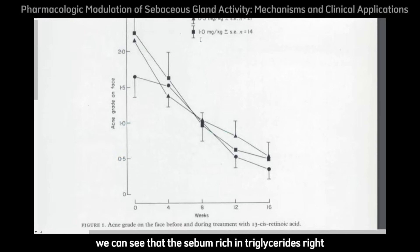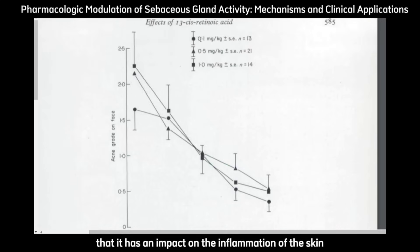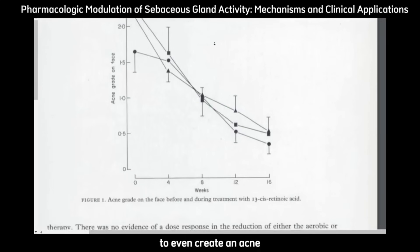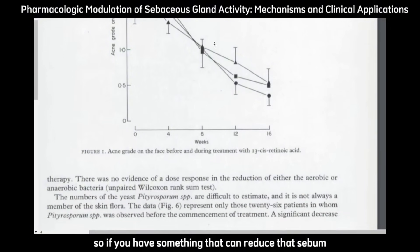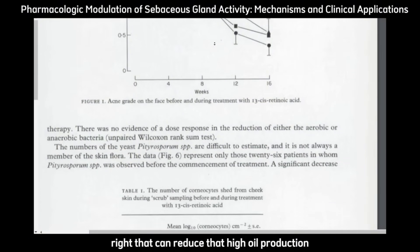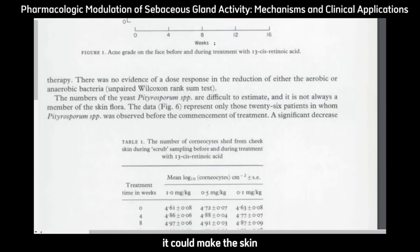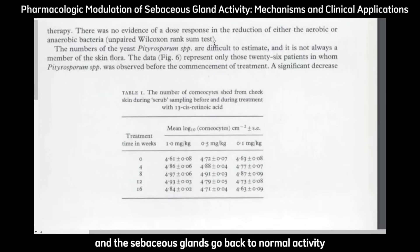We can see that sebum rich in triglycerides has an impact on the inflammation of the skin to even create acne. So if you have something that can reduce that sebum — that can reduce that high oil production — it could make the skin and the sebaceous glands go back to normal activity.